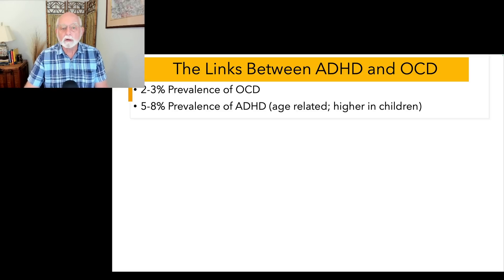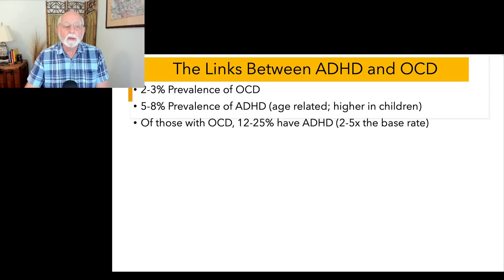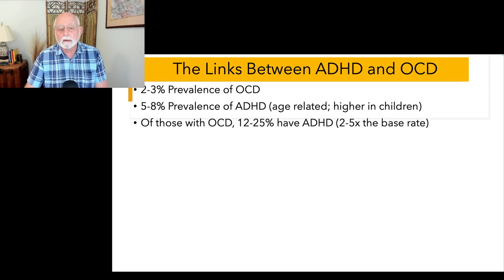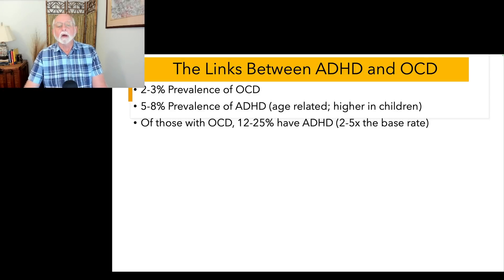ADHD prevalence is higher in children, around seven to eight percent, and lower in adults, around three to five percent. Of those with OCD, about 12 to 25 percent have ADHD, with the figure seeming to be closer to around 20 to 25 percent.